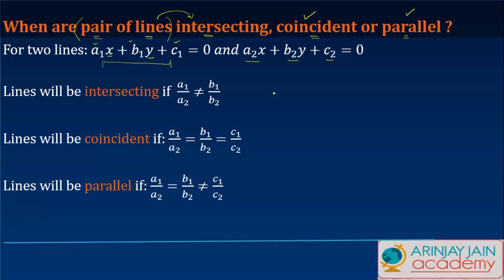The lines will be intersecting, which means they will be meeting each other, if a1/a2 is not equal to b1/b2.